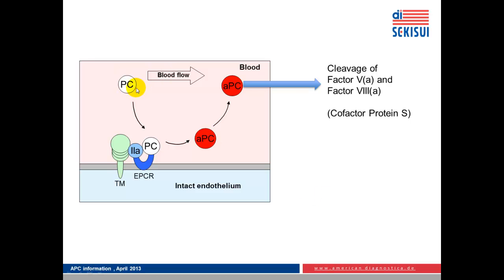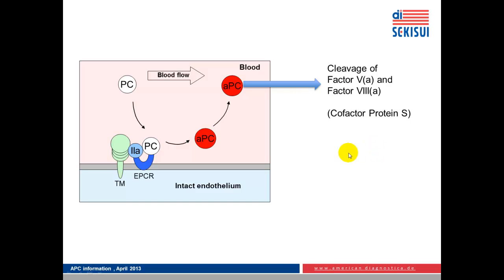You have protein C in the blood flow. Protein C is activated in a kind of negative feedback loop by thrombin factor 2a. Thrombin is bound by thrombomodulin, and together with endothelial protein C receptor, protein C and active thrombin are brought together. Thrombin cleavage converts protein C into activated protein C. Activated protein C then cleaves and inactivates factor 5a and factor 8a. And for this inactivation reaction, cofactor protein S is needed. So this is an important thrombin-driven feedback loop to counteract coagulation.